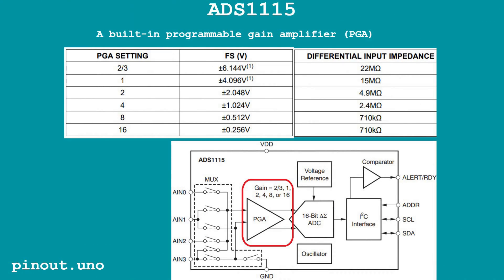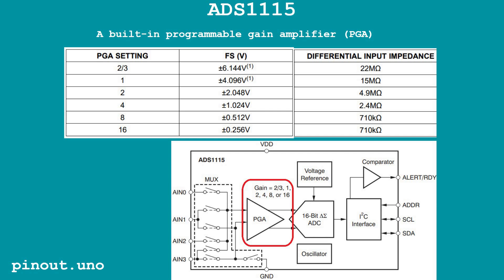A built-in Programmable Gain Amplifier allows software selection of the gain factor. As shown in the table, the selected gain factor determines the required voltage measurement range. In all ranges, the ADC can measure both positive and negative voltages. The negative part of the scale operates only in differential mode, from minus 32,768 to 32,767. In single-ended mode, only half of the ADC scale is available, reducing the effective resolution to half — 0 to 32,767.